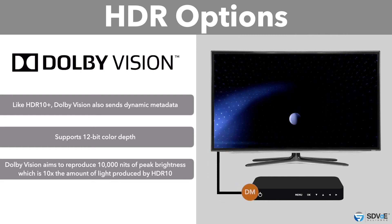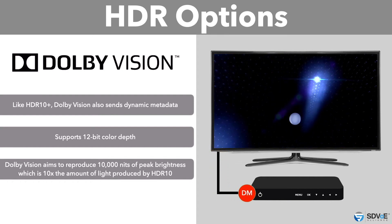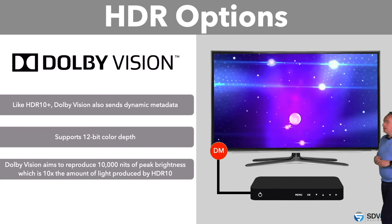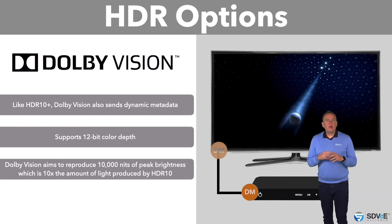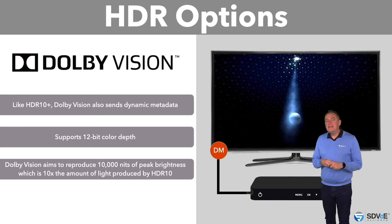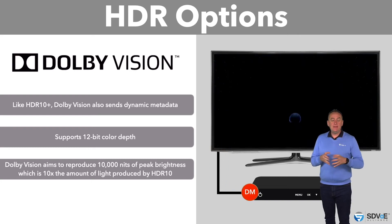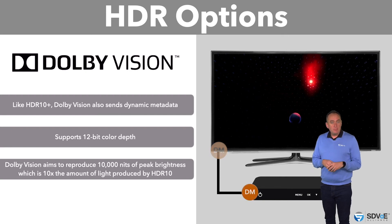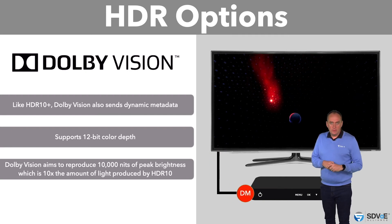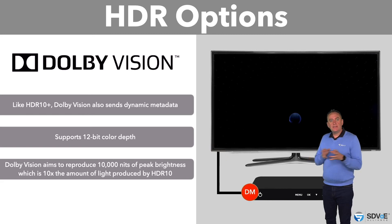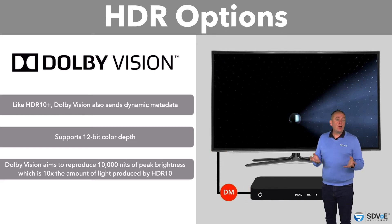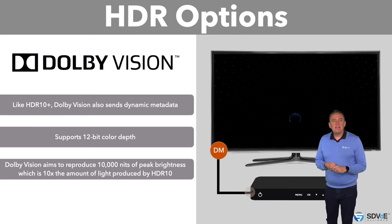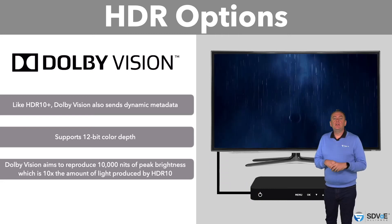Although there are currently very few displays that can actually support a 10,000 nits brightness value, Dolby Vision passes its metadata by encoding and hiding it inside the image itself. In HDR10, HDR10+, and standard Dolby Vision, the data transmitted from the source to the display is identical regardless of the display, and it's the display that uses metadata to adjust the image to suit itself.